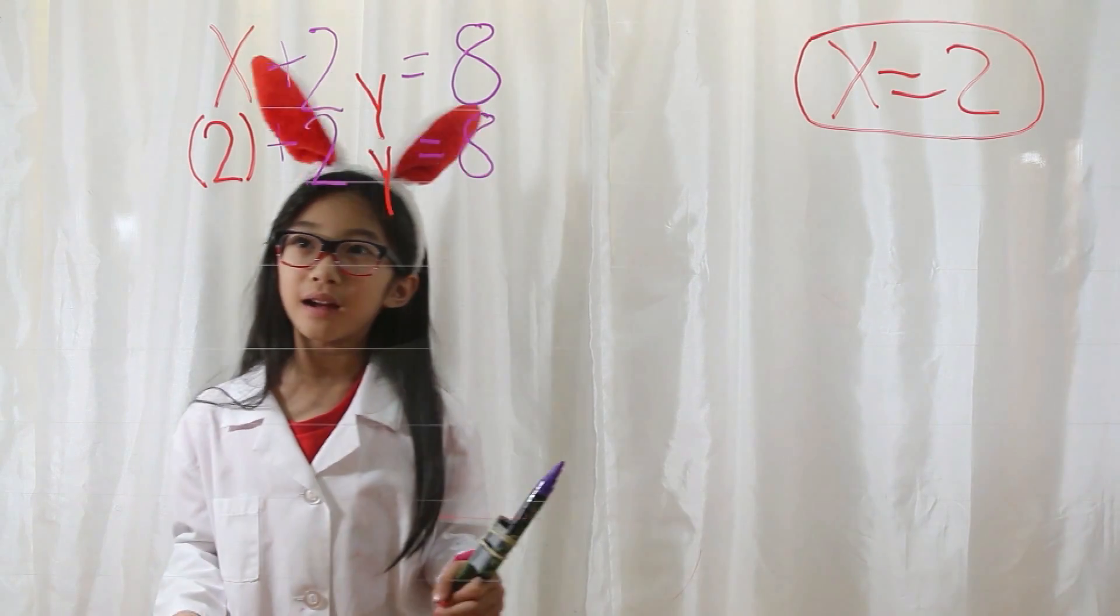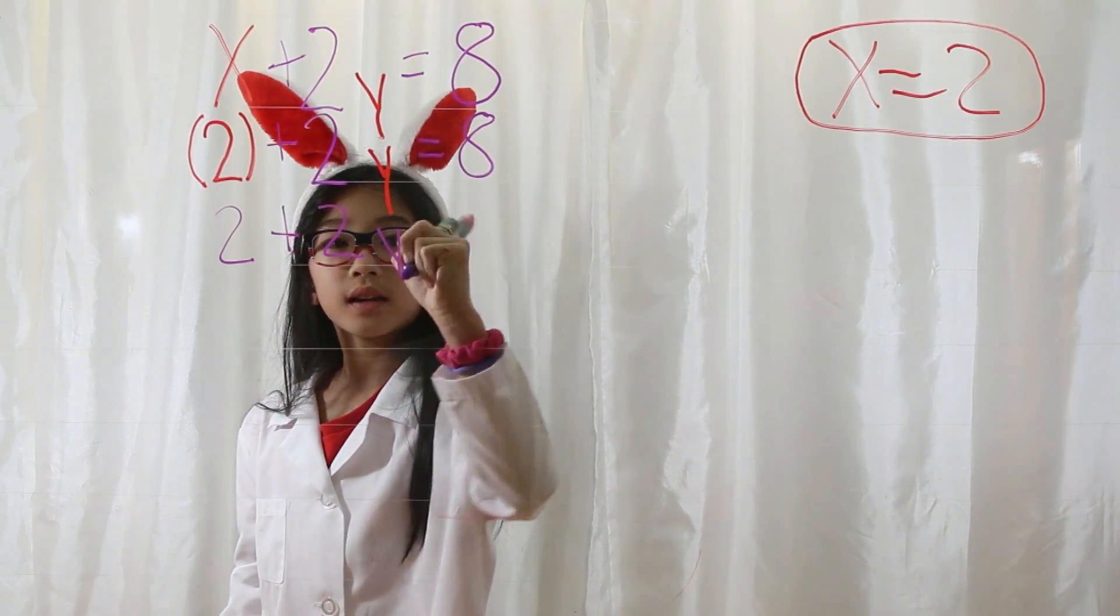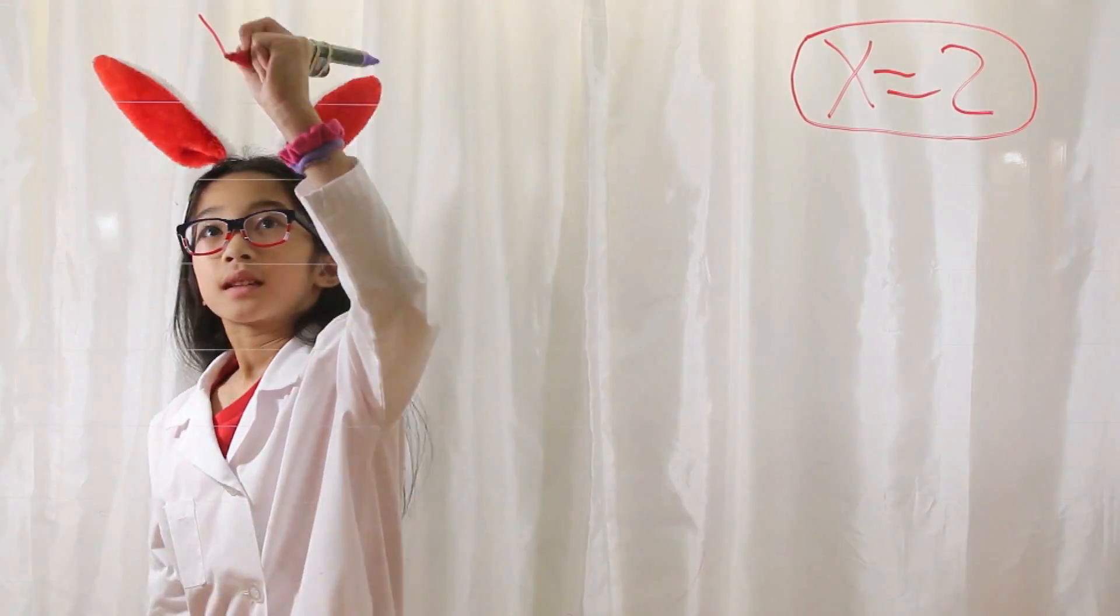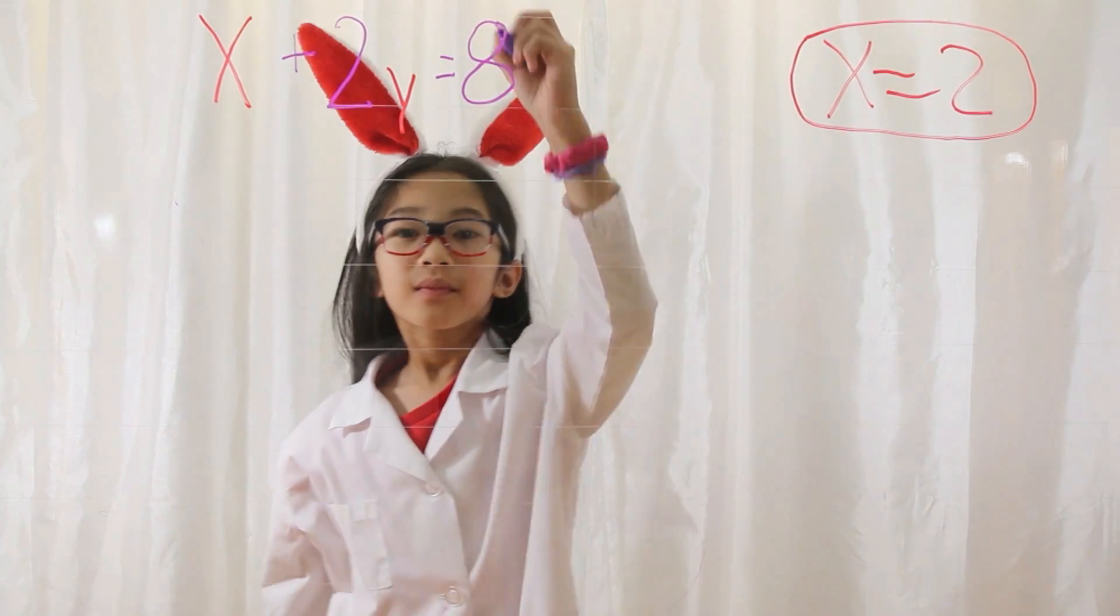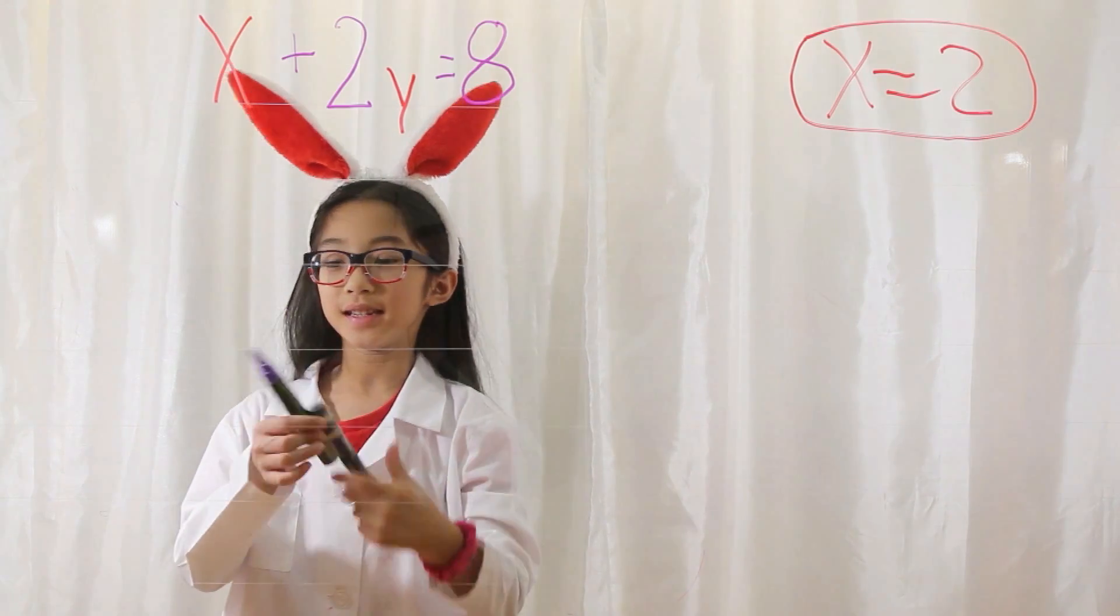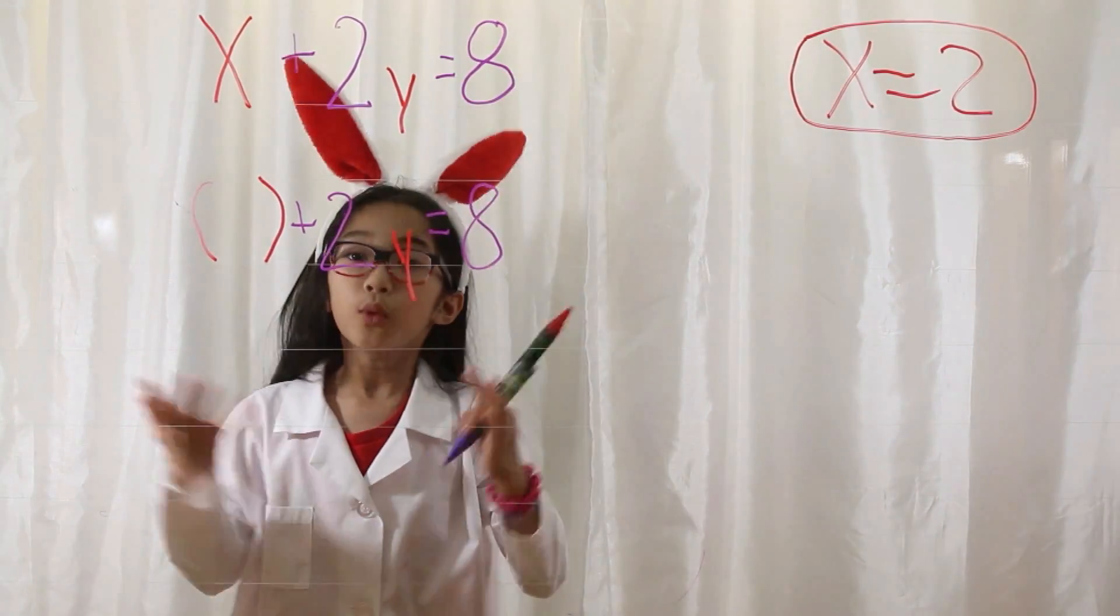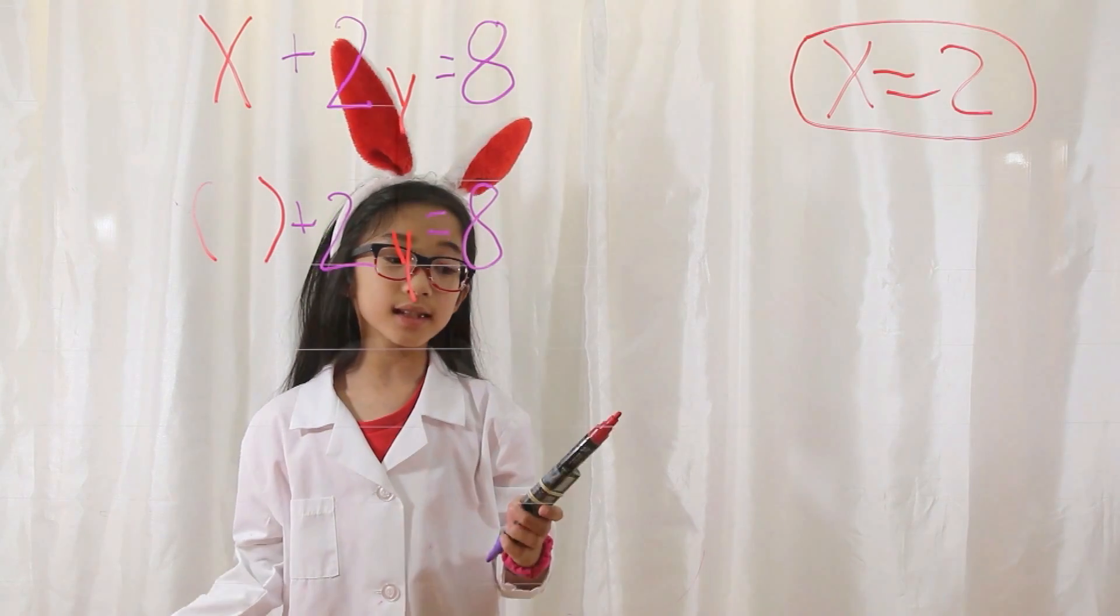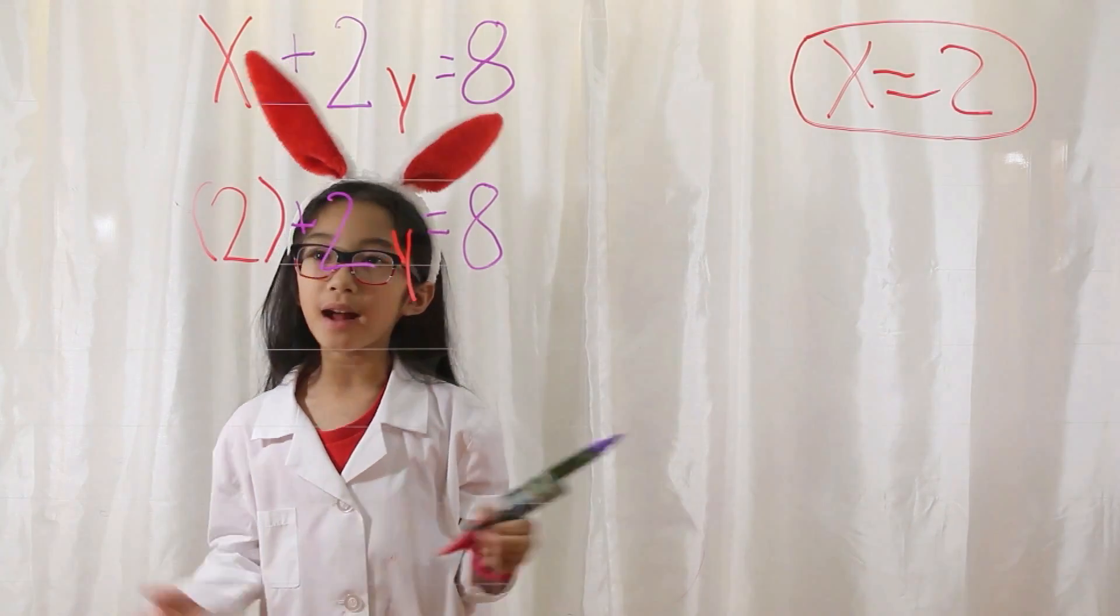Now multiply it out. 2 plus 2y equals 8. You must plug x inside the parentheses. Since x is equal to 2, 2 will go in the parentheses. Now multiply it out.